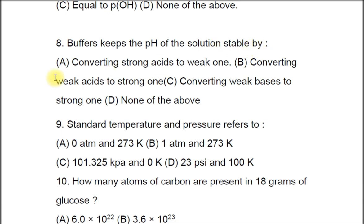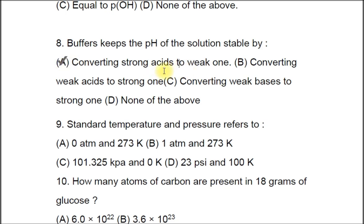Question 8: Buffers keep the pH of a solution stable by A) converting strong acids to weak ones, B) converting weak acids to strong ones, C) converting weak bases to strong ones, D) none of the above. The correct answer is A, converting strong acids to weak ones.